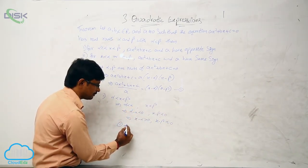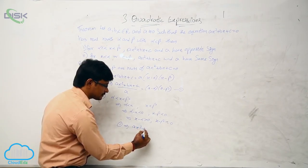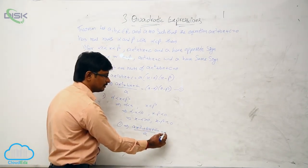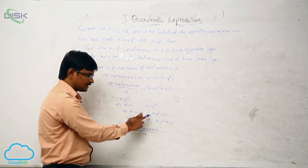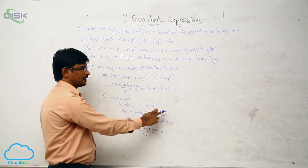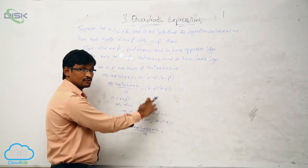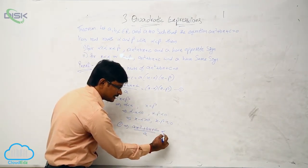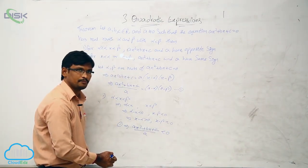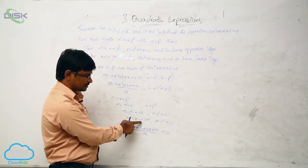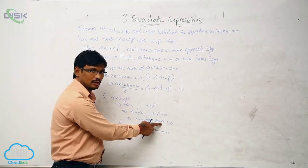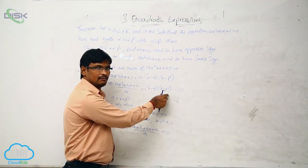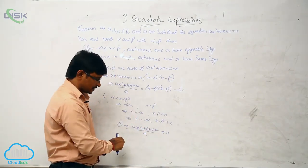From equation one, (ax² + bx + c)/a equals (x − α)(x − β). Here x minus alpha is positive and x minus beta is negative. Positive into negative gives negative — that is less than 0. Observe: this is positive, this is negative. Positive value into negative value gives a negative value.